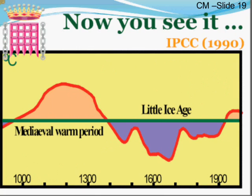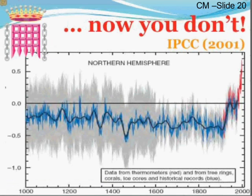The next major topic Chris Monckton deals with, shown on slide 19, is the Medieval Warm Period. He shows a graph taken from the IPCC 1990 report showing a warm period in the medieval era, then a Little Ice Age, and then modern temperatures — not very warm. The argument is that the Medieval Warm Period was quite warm, so perhaps this temperature rise is part of natural fluctuation. However, the IPCC 2001 report didn't show the Medieval Warm Period in the same way, so let's investigate this issue.